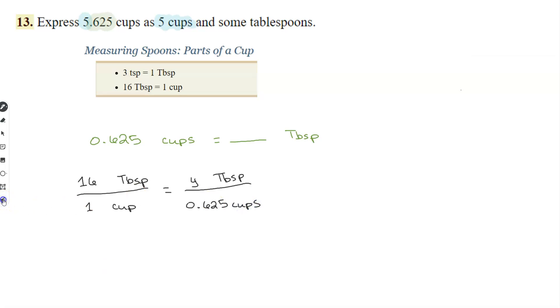That's a nice proportion. Tablespoons is on the top. Cups is on the bottom. Everything is symmetric. We are happy.